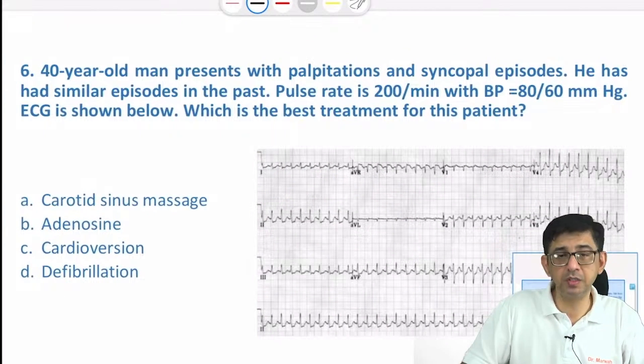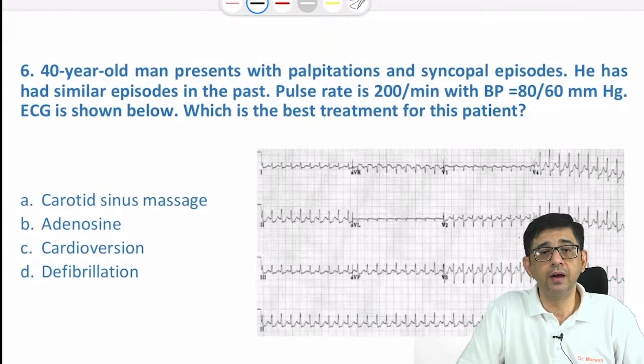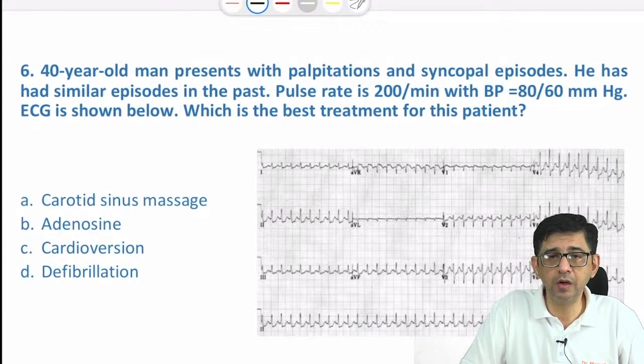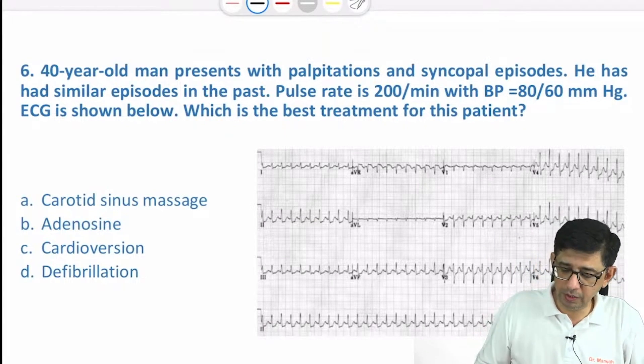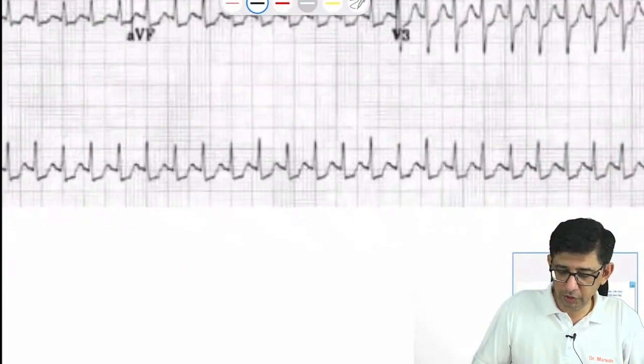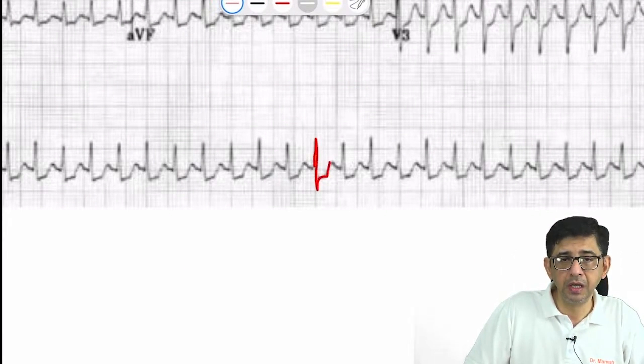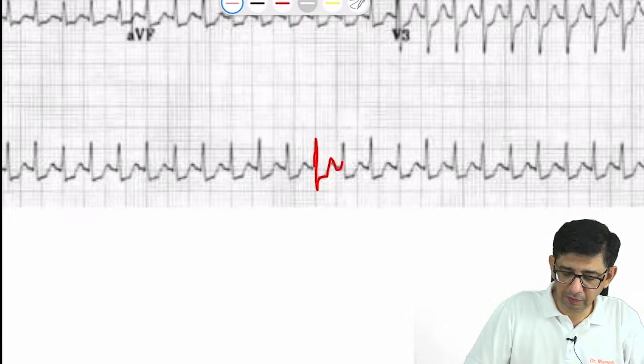A 40-year-old man presents with palpitations and syncopal episodes. The pulse rate is 200, BP is low, and the ECG shows a narrow QRS tachycardia. You can see the narrow QRS tachycardia with ST depression and hidden P waves.